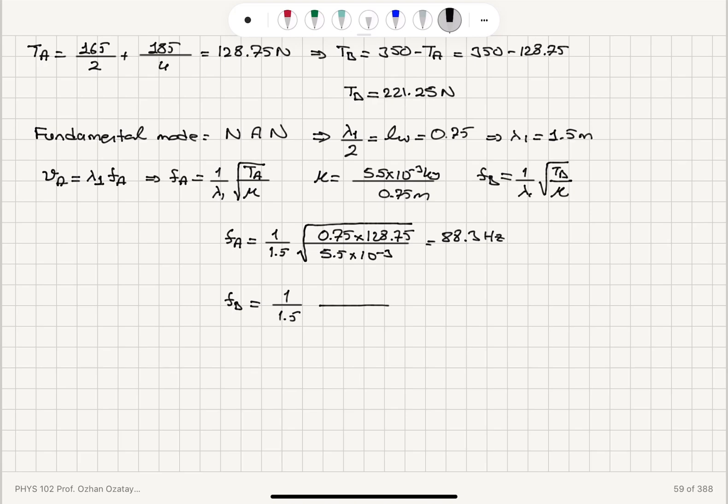The frequency on wire B is 1 over 1.5. Now we have 0.75 times tension on wire B, 221.25 divided by 5.5 times 10 to minus 3 kilograms square root. And this turns out to be 116 hertz.